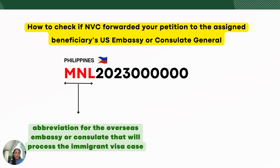How can you check if the NVC forwarded your petition to the correct U.S. Embassy or Consulate General where the beneficiary will conduct the interview? The first three letters of your NVC case number are the abbreviation of the overseas embassy or consulate that will process the case. In my case, 'MNL' stands for Manila, indicating the interview will be conducted in the Philippines, followed by the other 10-digit numbers.